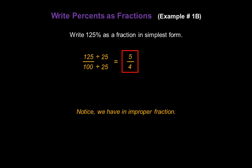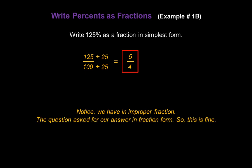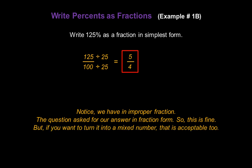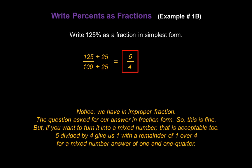Now notice we have an improper fraction. Most of the time we don't want to keep our answer in improper fraction form, but the question did ask for our answer in fraction form, so this is fine. But if you want to turn it into a mixed number, that's acceptable too. Five divided by four gives us a whole number of one and a remainder of one over four, for a mixed number answer of one and one quarter.